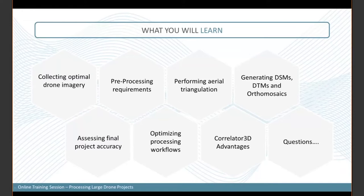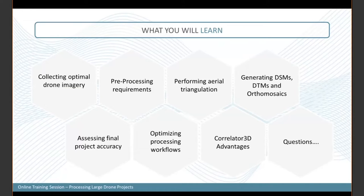Today you will learn about collecting drone imagery in an optimal way — an overview of requirements for drone projects including scope, GCPs, overlap, and other parameters. We'll also cover pre-processing requirements: what to check before starting production. Then we'll review the three main modules of the software: the AT part where we set overall accuracy, generating DSMs and DTMs, and ortho mosaics, and how those components affect the overall output.